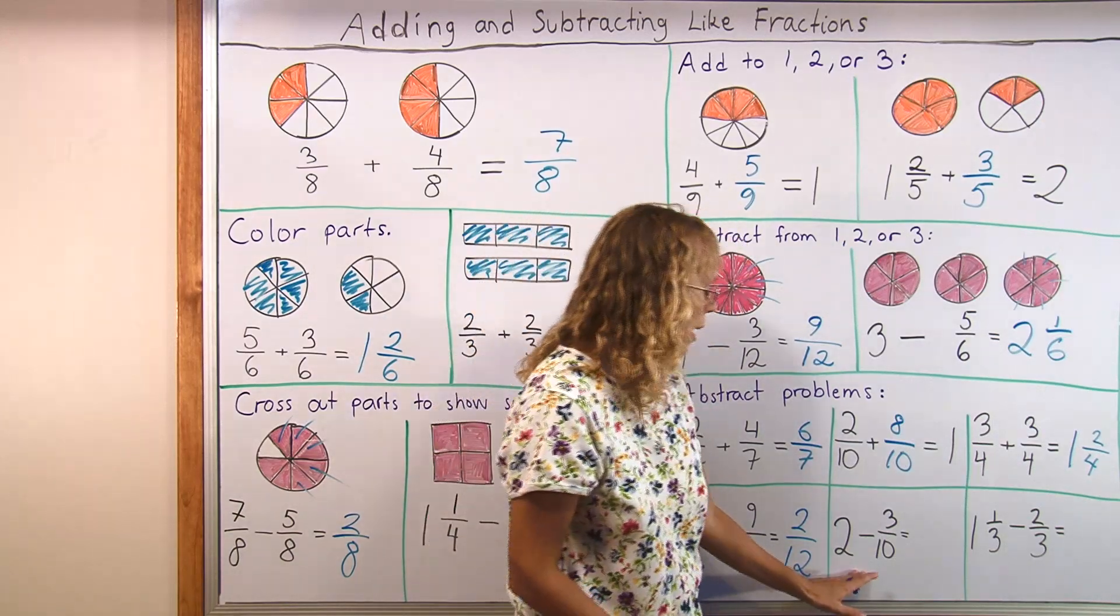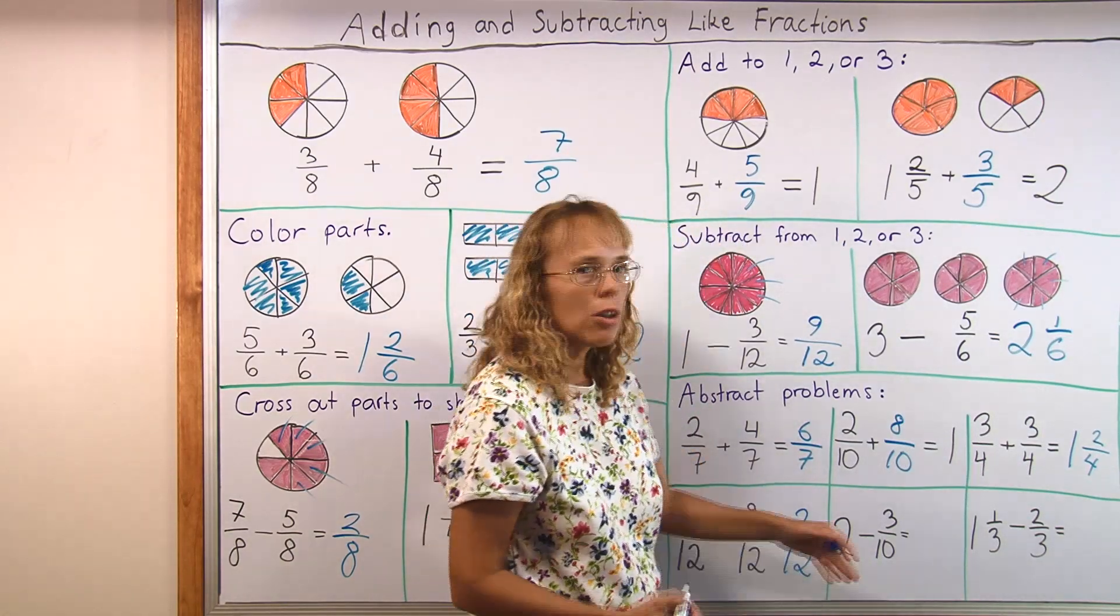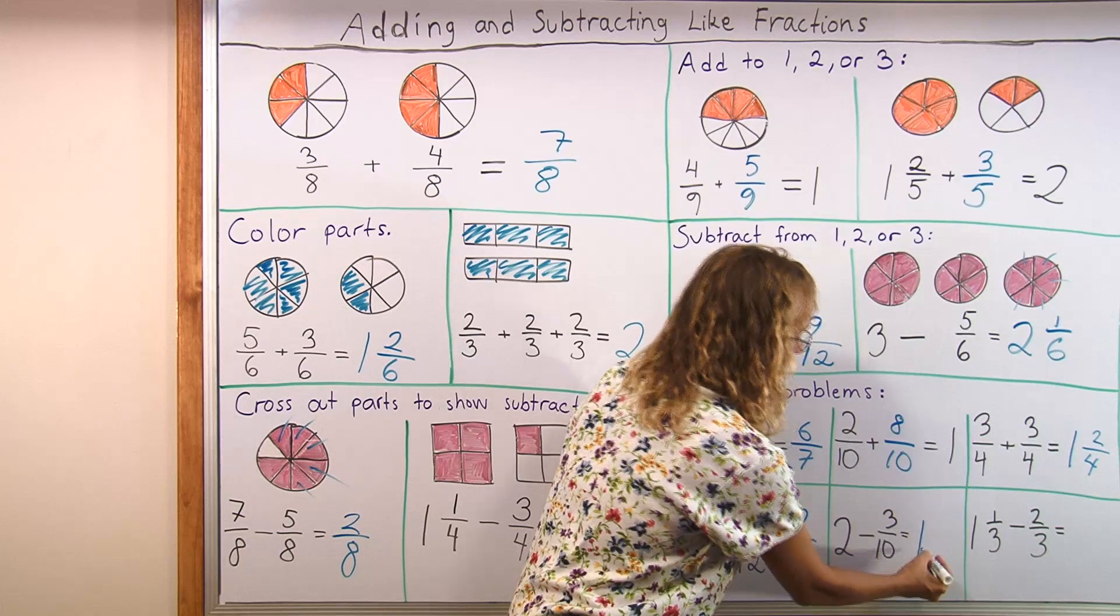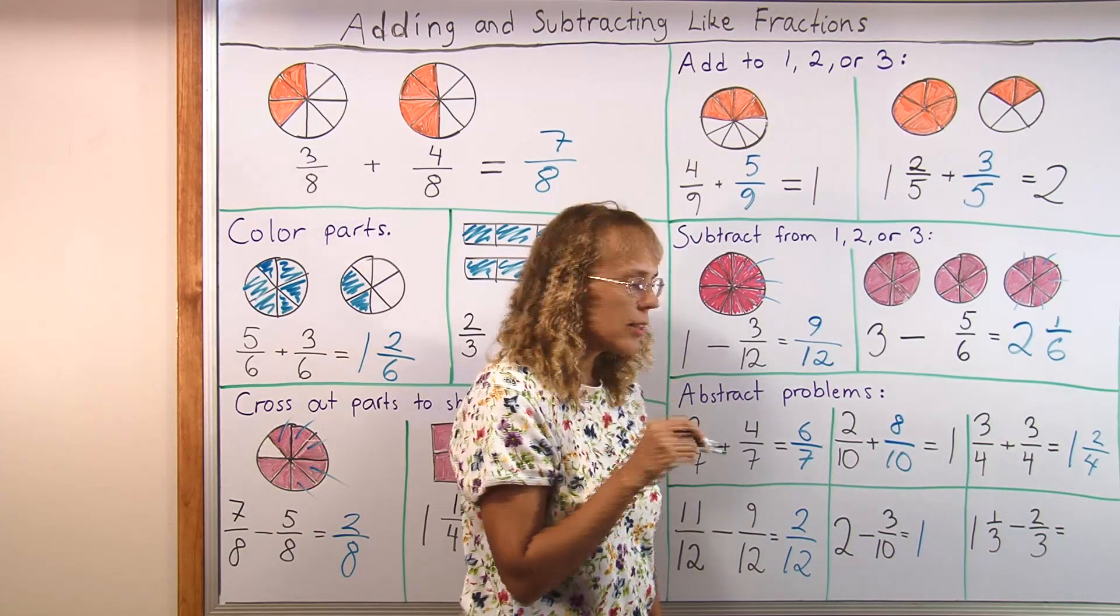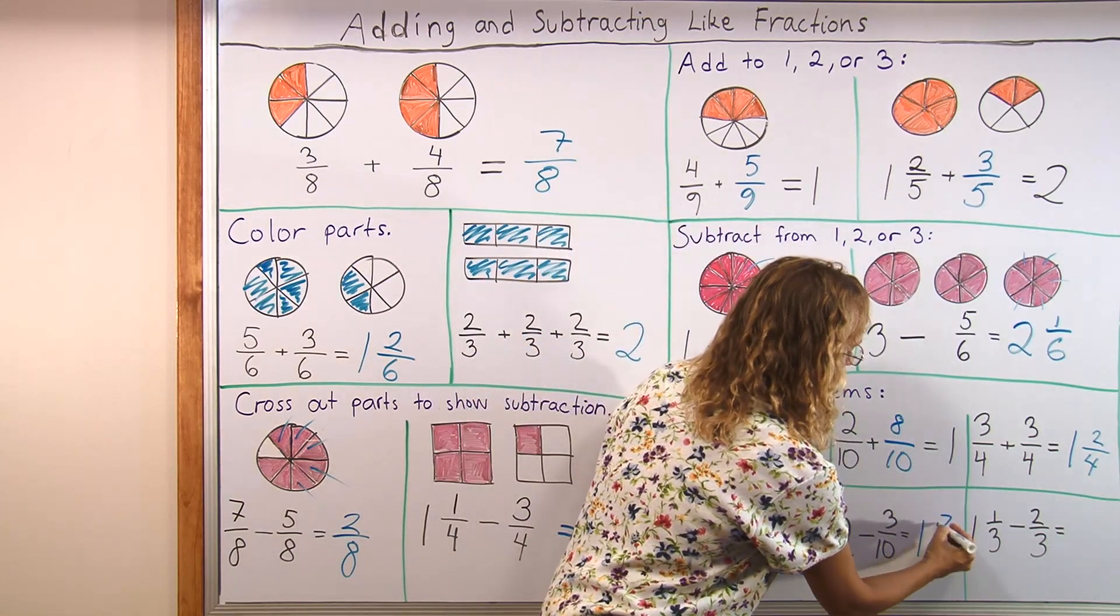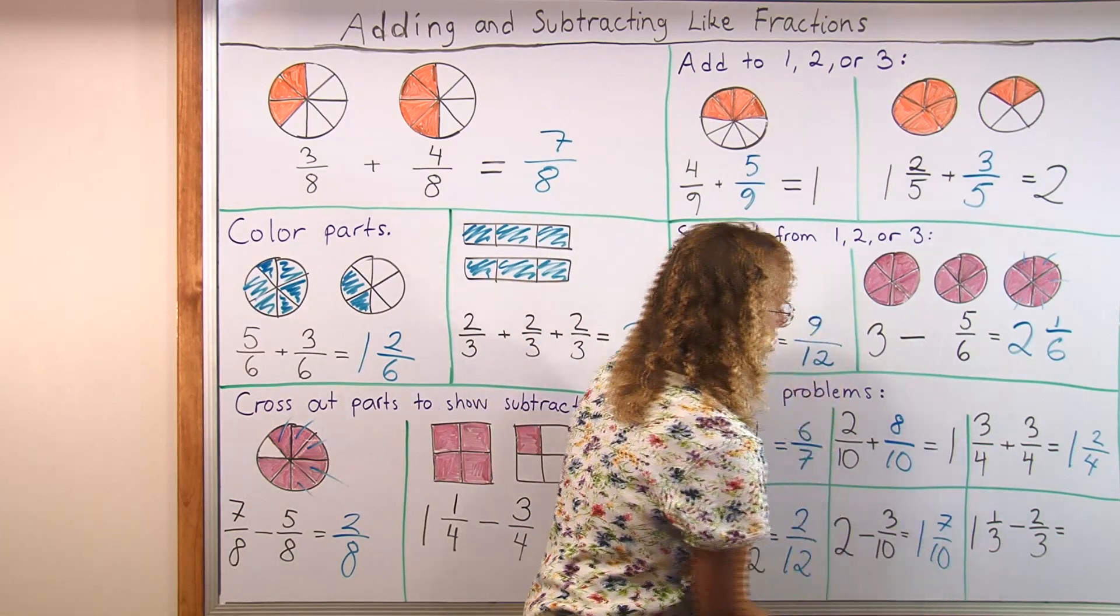Or 2 whole pies take away a little fraction. So obviously there's going to be 1 whole pie left. And then the pie is divided into 10 parts. We take away 3 parts. So 7 slices are left of the second pie.